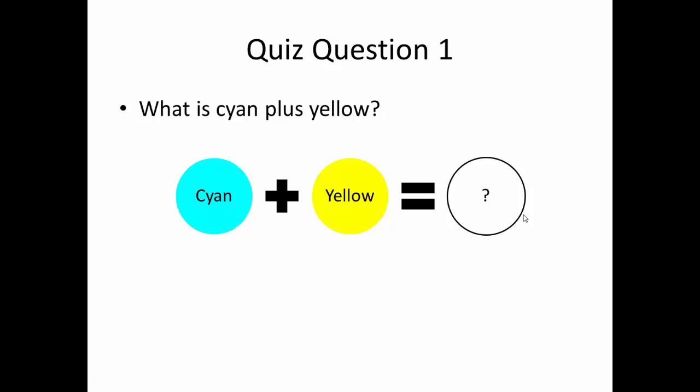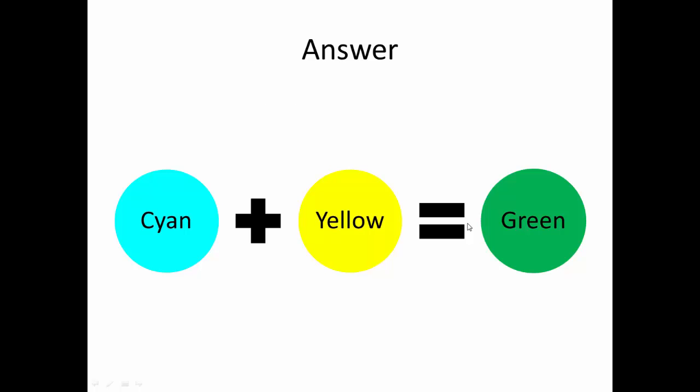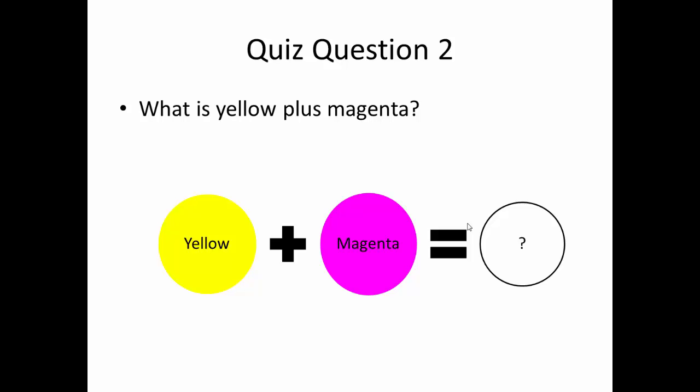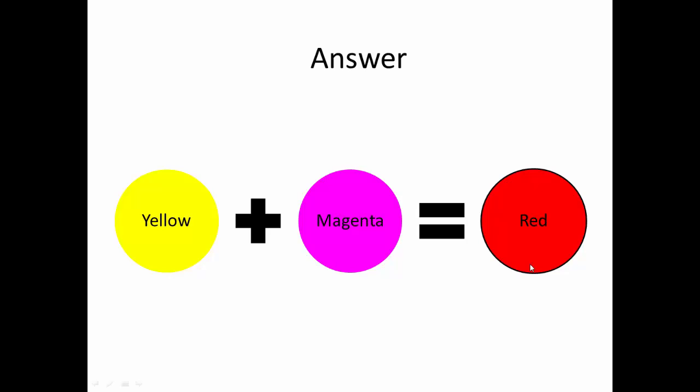So here is a quiz. What is cyan plus yellow? Cyan plus yellow is green. And what is yellow plus magenta? Yellow plus magenta gives you red.